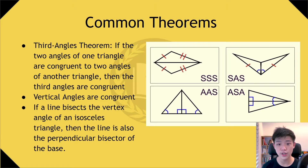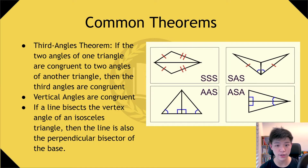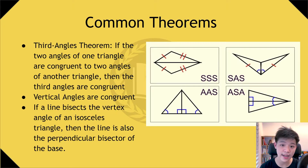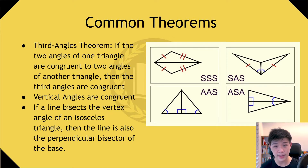Other theorems we need to know to determine whether triangles are congruent include SSS, SAS, AAS, and ASA. These are simply ways to determine congruency by looking at sides and angles: side-side-side, side-angle-side, angle-angle-side, and angle-side-angle. If these corresponding parts are congruent, then the triangles are congruent.